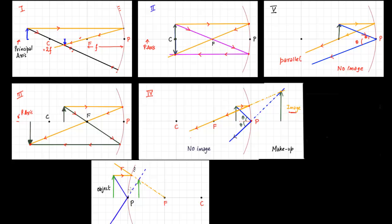The second ray strikes the pole, making angle theta with the principal axis, and the reflected ray also makes angle theta. Both reflected rays diverge on the left side of the mirror, but tracing them back, the blue ray and the orange ray intersect behind the mirror, forming a virtual image behind the convex mirror.